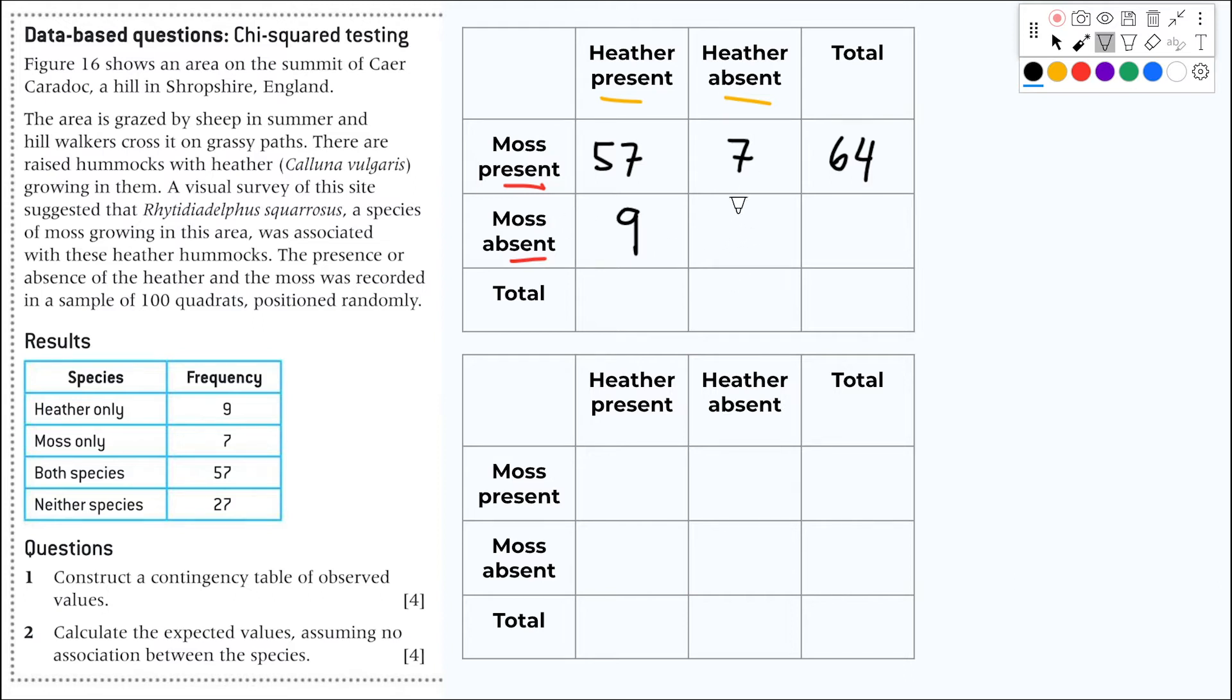No heather, no moss, that is neither species, that's 27. I can add them together here. I have 36 quadrants with no moss, and the total will be 100. Here we have the total number of quadrants with heather will be 57 plus 9, that is 66.